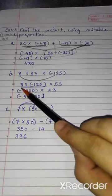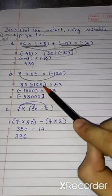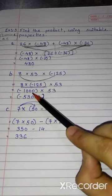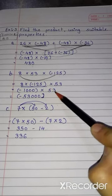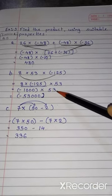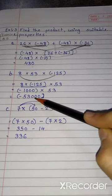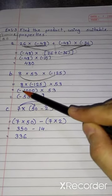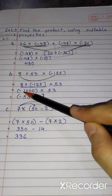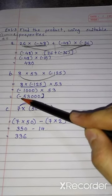First, we will multiply these two numbers. 8 into minus 125 is minus 1000 into 53. Now, the multiplication is easier. Minus 1000 into 53 is minus 53,000. Here, one integer is negative, so answer will be in negative integer.